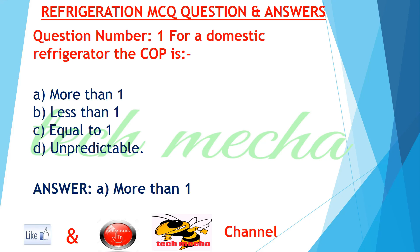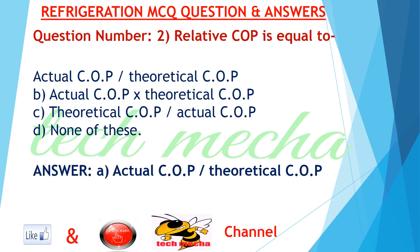Question number 1: For a domestic refrigerator, the COP is A. more than one, B. less than one, C. equal to one, D. unpredictable. Answer: A. more than one. Question number 2: Relative COP is equal to A. actual COP divided by theoretical COP.